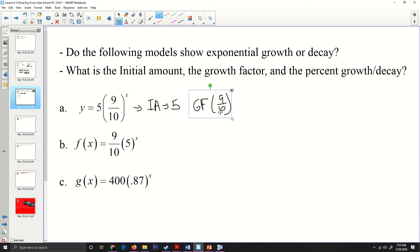this is going to be a decay. And if I go one minus nine tenths, I'll have one tenth and one tenth is 0.1. And so this is going to be a 10% decay.